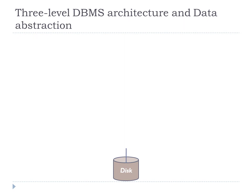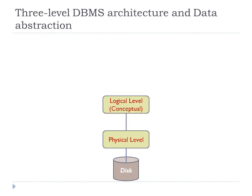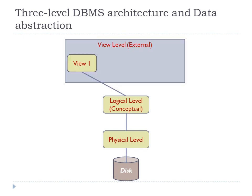According to the three-level DBMS architecture, we have the physical level, which is the lowest level. The next higher level is the conceptual level or logical level. At the top we have the view level or external level, which contains one or more views — view one, view two, and so on up to view N. These three levels describe the schema or implementation of a table at different levels.